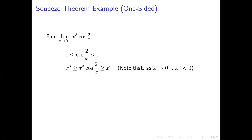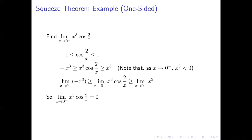We're letting x approach 0 from the left, so our x values are always to the left of 0 — always negative. That means x³ is always going to be negative. So when we multiply everything by x³, we need to switch the directions of our inequality signs. We get: -x³ ≥ x³·cos(2/x) ≥ x³ for x approaching 0 from the left. Taking the limit of all three as x approaches 0 from the left, the limits of -x³ and x³ on the outside are both 0, found by substitution.